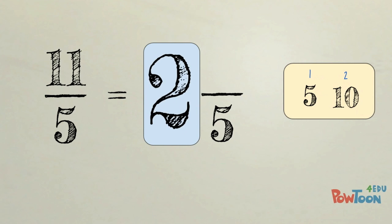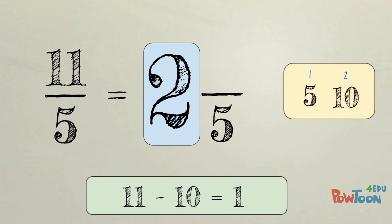Now we went in two times so that is our whole number. To get the numerator we take 2 times 5 is 10 and subtract it from the original numerator. 11 minus 10 is 1. That is our new numerator. So 11 fifths is the same as 2 and 1 fifth.